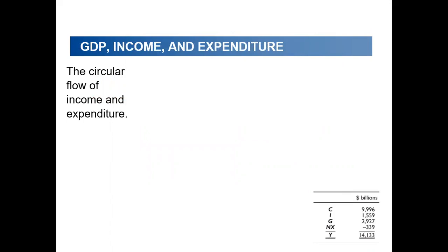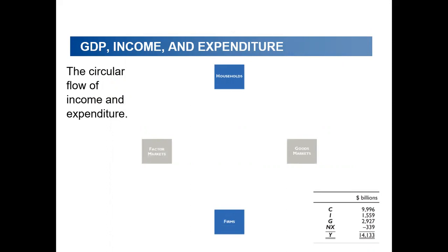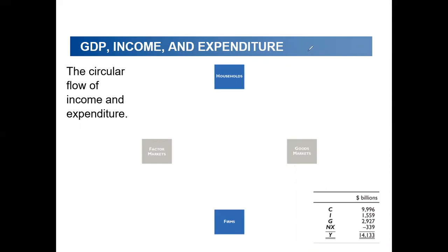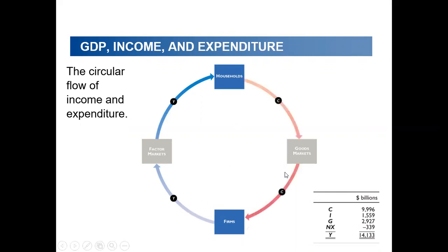Now let's use the circular flow to explain income. The circular flow shows the relationship between households and firms. Firms provide factors of production — resources, land, labor, and capital — and output in the form of goods and services. The cycle starts from firms, which give households money after receiving sales from goods markets. This income is channeled from firms to households, and it reflects on consumption.